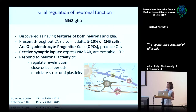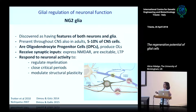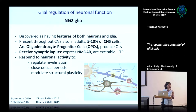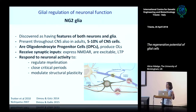NG2 glia receive synaptic inputs, express NMDA receptors, are excitable, and can undergo long-term potentiation. They are in close interaction with neurons, and it's thought that they sense the state of neural circuits and respond to it. One way they respond is to regulate the state of myelination: depending on the requirements or health of the neuron, they can trigger the production of more oligodendrocytes if required. They can actively regulate how many oligodendrocytes are needed to maintain proper insulation of the neuron. Oligodendrocytes and OPCs also provide trophic factors that maintain the health and survival of the neuron.